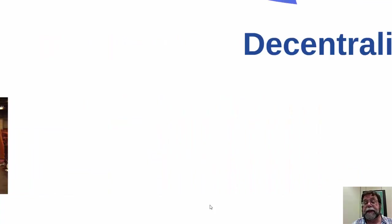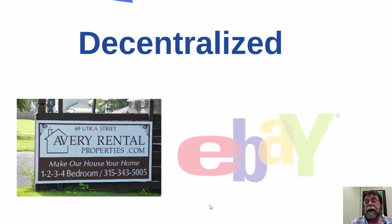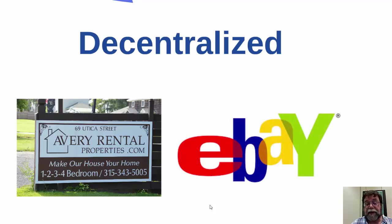Trade could also take place in a decentralized manner, in which case buyers and sellers can be in many different locations. One example of this is rental real estate markets, where each home is a little bit different and located in different areas. eBay is another example of an extremely decentralized virtual market in which buyers and sellers can be located in any country as long as they have internet access.